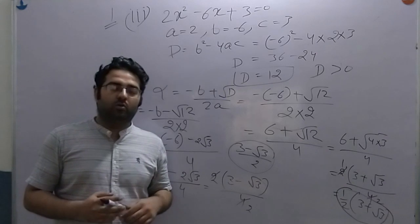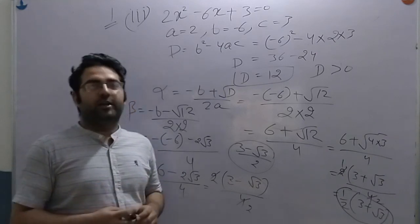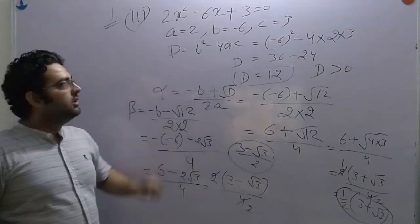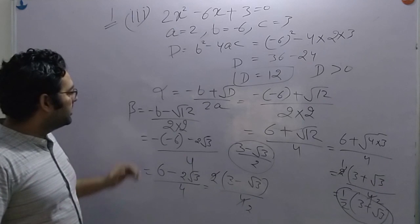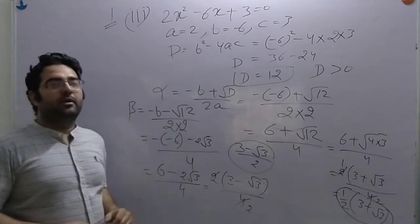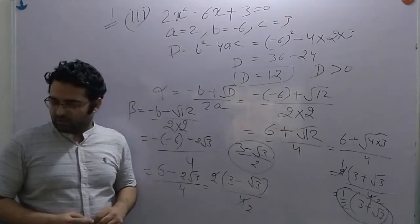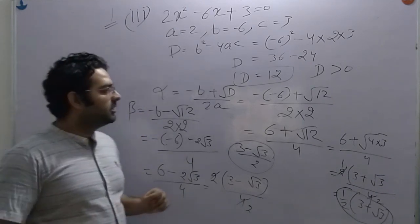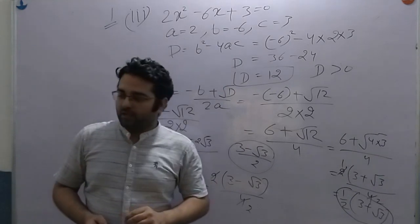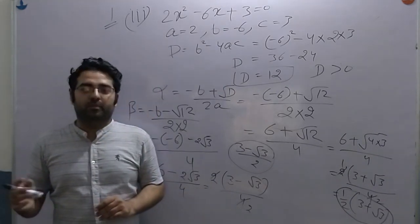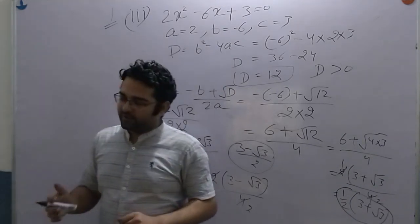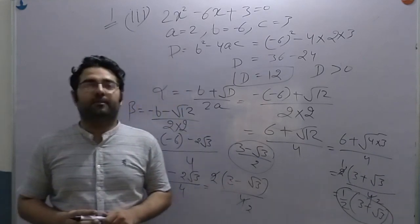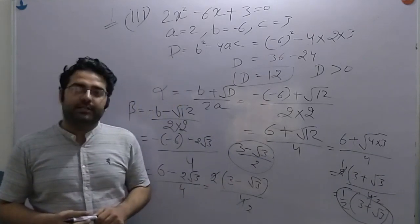This type of calculation is how we find our roots with the help of the discriminant. Then alpha and beta give us our two roots. Today's lecture will be enough. The remaining topics and further questions will be covered in the next video. Thanks for watching.